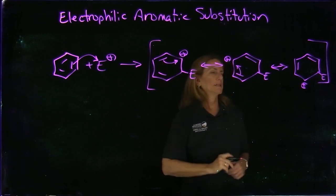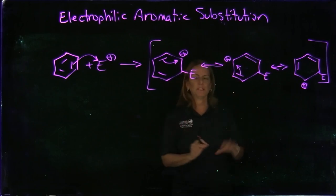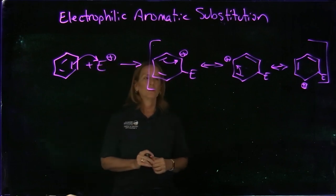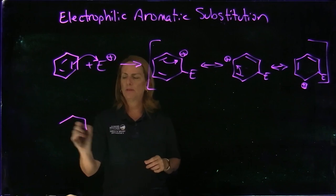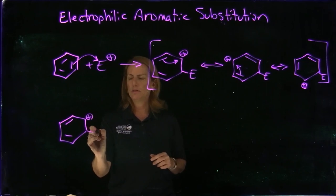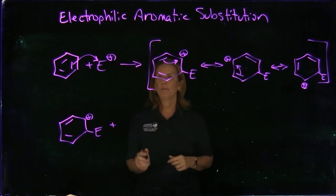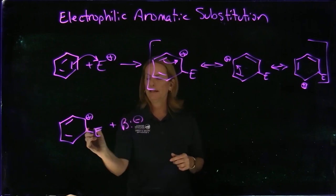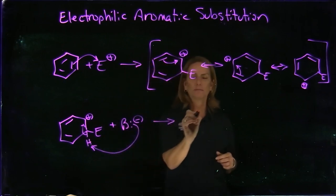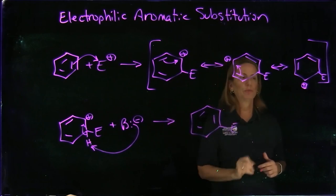This sigma complex is formed and is stable. We've broken up the aromatic ring and added the electrophile. When you have resonance structures and you're continuing on in the mechanism, you can pick any one of the structures—usually the first one is easiest. In the second part of this reaction, we're going to add a base which will remove a proton where the electrophile was added and re-aromatize the ring. Effectively, we keep the benzene ring but replace one of the hydrogens with the electrophile.